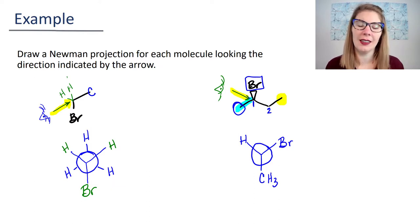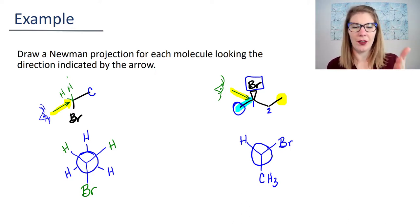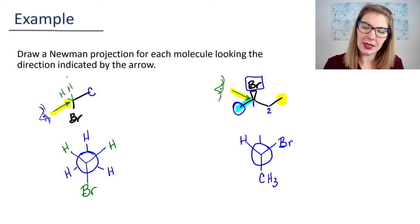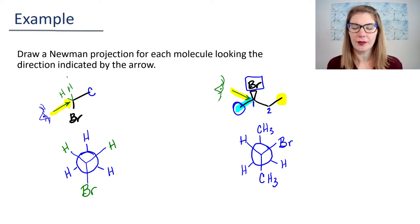My back carbon has a CH3 attached to it, and that CH3—see how it's pointing upward away from your eyeball? That means my CH3 will be here, and then I fill in those other locations with my hydrogens. Drawing Newman projections is really difficult, so you definitely want to give it loads of practice.